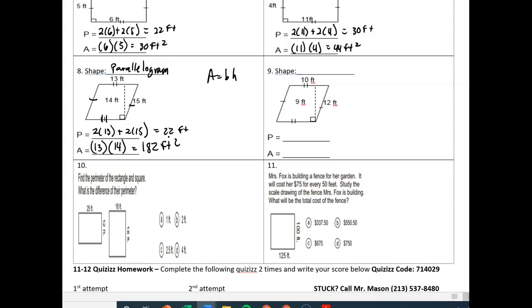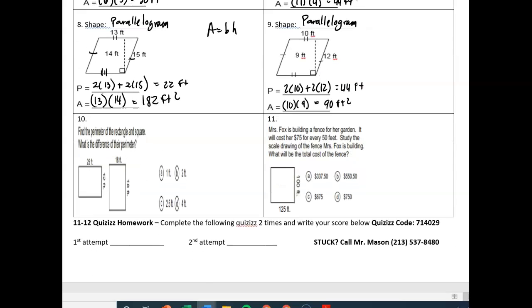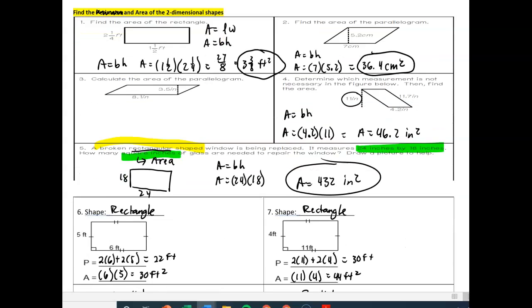So I'd like you to try and do number nine, just like number eight in Edpuzzle. So you should have gotten the answers of your perimeter being 44 feet and your area being 90 feet squared. Sometimes if you watch the video religiously, like I'm asking you to, I give you nice little surprises. And so your first surprise is that you do not have to do number 10. I'd like you to cross that off.